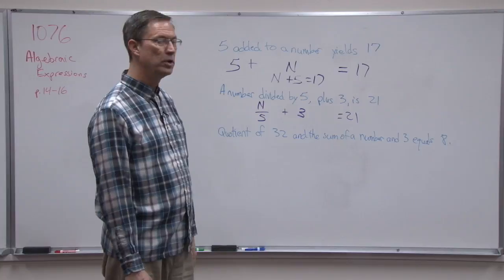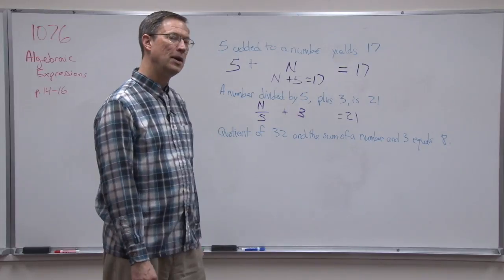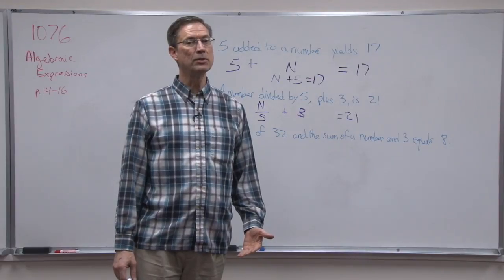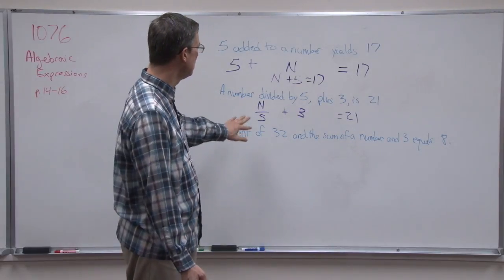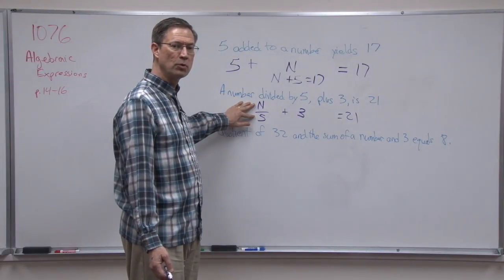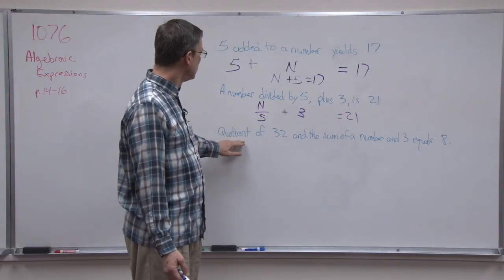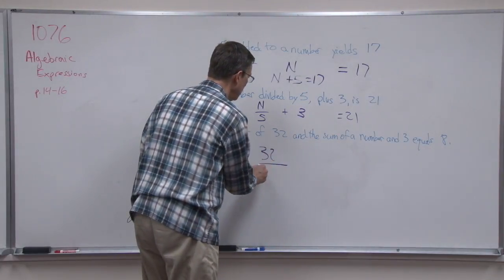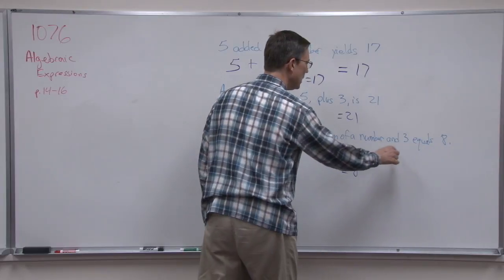Let's take this one. The quotient of 32 and the sum of a number and 3 equals 8. Now we've got to think back. Remember, what does quotient mean? Quotient is the answer to a division problem. So we're dividing two things. I'm going to use this type of division. This is what's most often used as you move through your math courses and get on into algebra. So a division means you're going to have a numerator over a denominator. So I'm going to put 32 on the top. The equals part here at the end, that's easy. Equals 8.